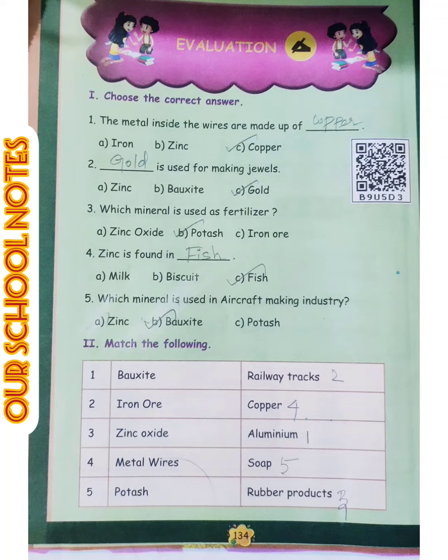Fifth one: Which mineral is used in aircraft making industry? The answer is option B: Bauxite.